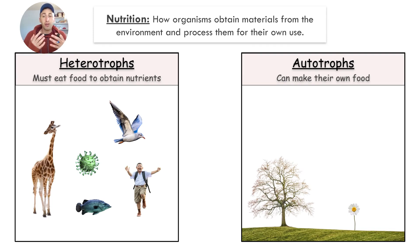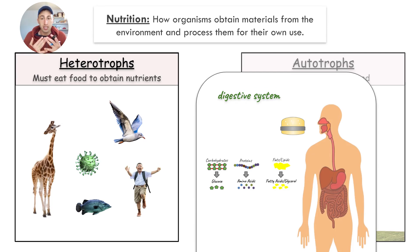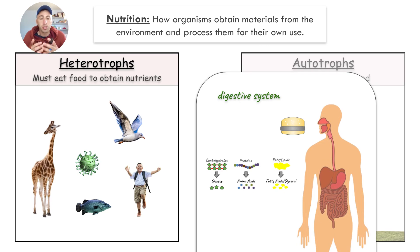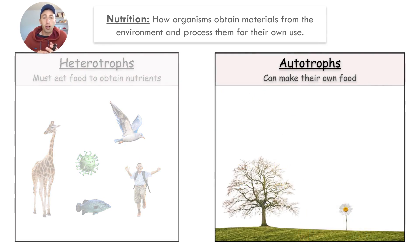There are two types of nutritious organisms: heterotrophs and autotrophs. Heterotrophs — we are heterotrophs — eat food to obtain nutrients through the digestive system. If you eat a hamburger containing carbohydrates, proteins, and fats, your digestive system breaks it down into glucose, amino acids, and fatty acids, which your cells then use to make your own carbs, proteins, and fats. Heterotrophs like us, fish, and some bacteria eat food to obtain nutrients.